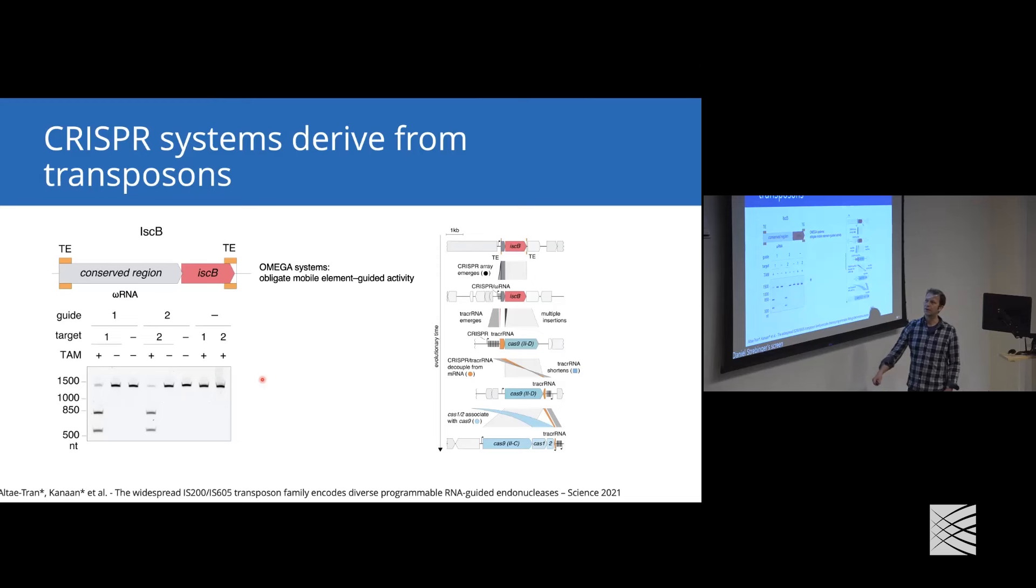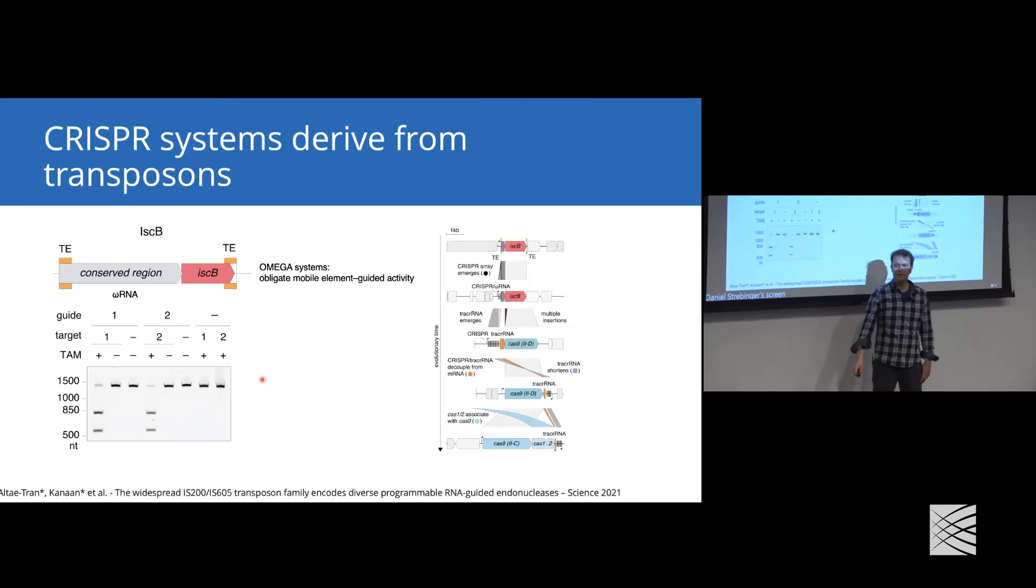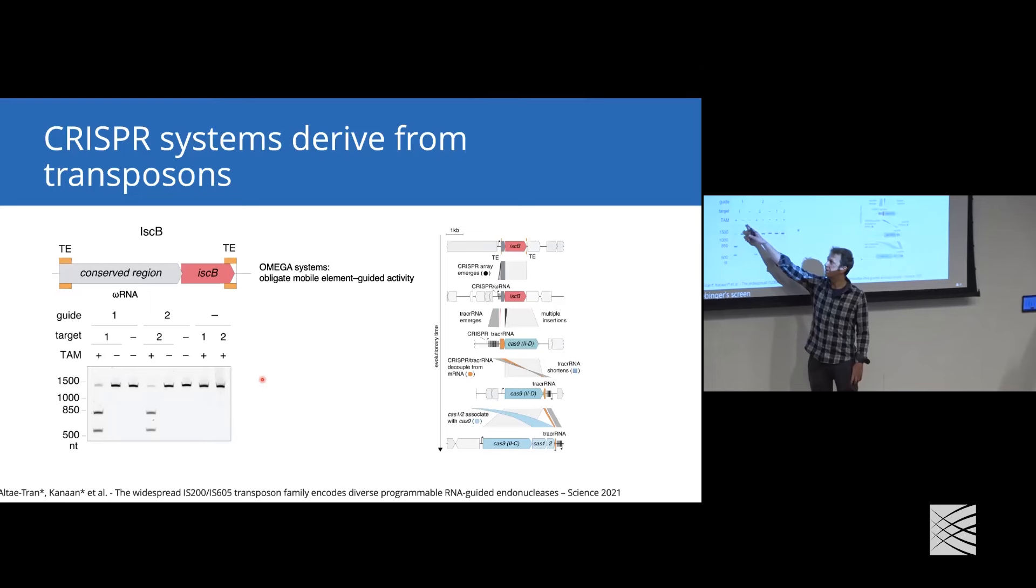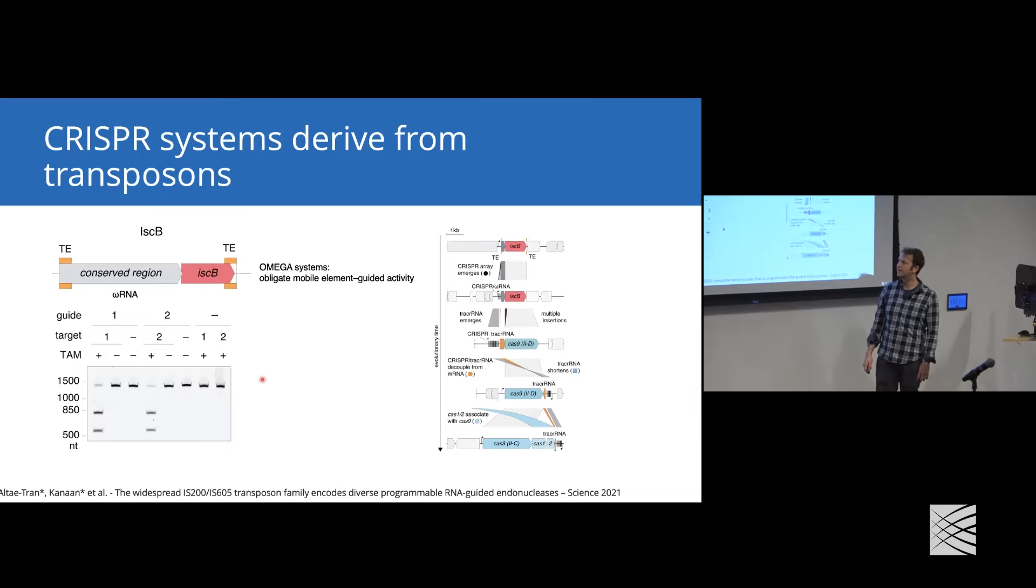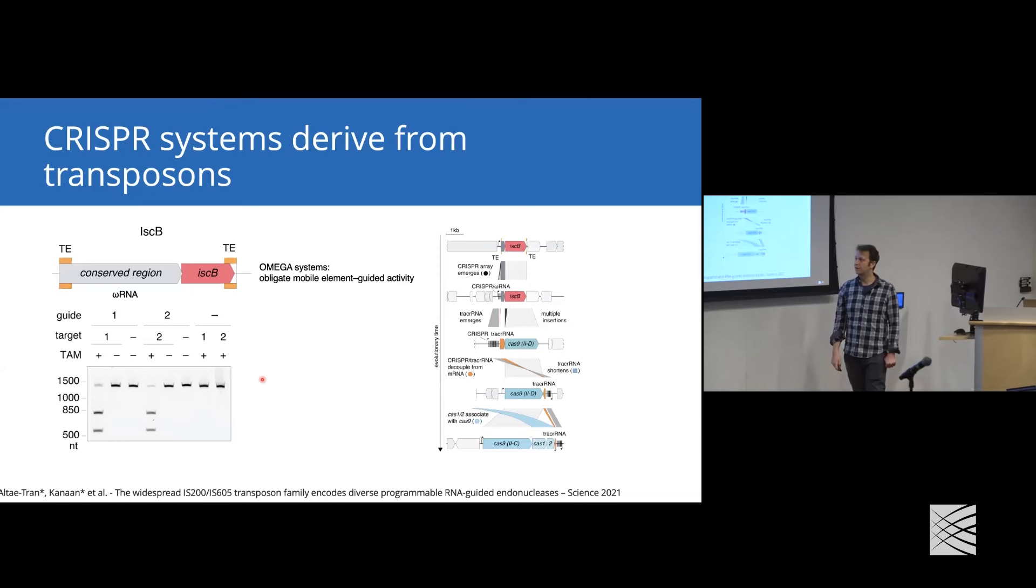It's very similar to CRISPR systems in which the omega RNA and IscB form a complex, and this complex is capable of introducing double-strand breaks. In this example, if you use guide one on target one in the presence of a TAM - and TAM is the same as a protospacer adjacent motif but in this case it's a target adjacent motif - we can see efficient induction of double-strand breaks on double-stranded DNA. However, if we don't have a TAM present, you don't see this induction, and similarly if we don't have the target present.